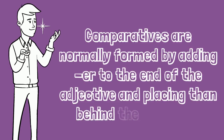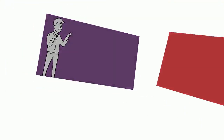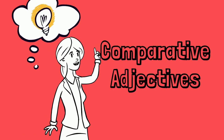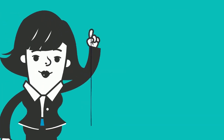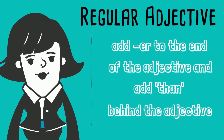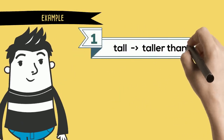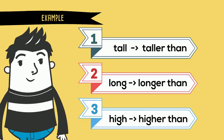Comparatives are normally formed by adding 'er' to the end of the adjective and placing 'than' behind the adjective. Comparative adjectives spelling rules. Rule number one: for regular adjectives, we add 'er' to the end of the adjective and add 'than' behind the adjective. For example: tall → taller than, long → longer than, high → higher than.